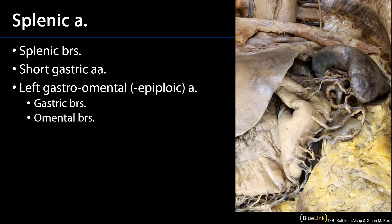Finally, the splenic artery. In this session we're not yet at the point where we'll have reflected the stomach away and moved through the pancreas to see this fully, but we can see the distal portion of the splenic artery here and see exactly how tortuous and curvy it is. That splenic artery will give off short gastric branches — which we can see here — serving the fundus of the stomach. It's also going to give off splenic branches to the spleen. And then finally, the left gastroomental artery, also called the left gastroepiploic artery, which will anastomose with the right gastroomental artery of the gastroduodenal artery. Like its counterpart, it has both gastric branches and omental branches.